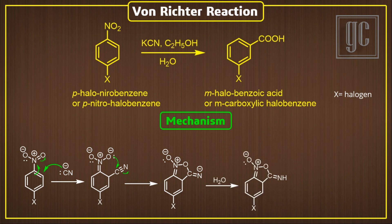The negative charge on nitrogen is neutralized by the solvent. Now, to re-establish aromaticity, in the presence of base, one H⁺ ion is removed, and the bonding electrons move toward the benzene ring, and rearrangement of pi electrons takes place. And this intermediate is formed.